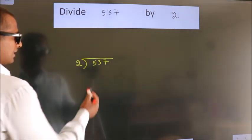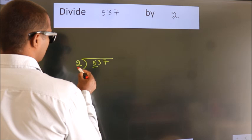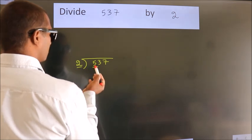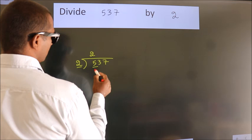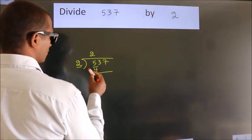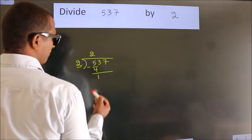Next. Here we have 5, here 2. A number close to 5 in the 2 table is 2 times 2, which is 4. Now we subtract and get 1.